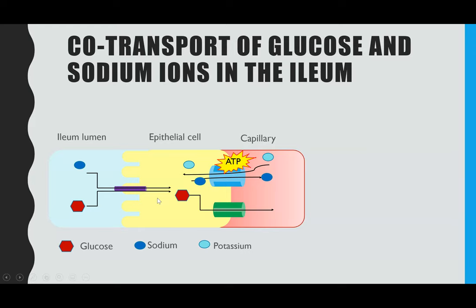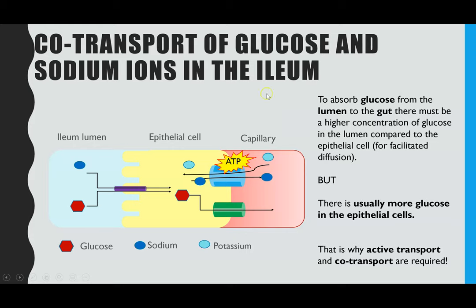Our example of active transport that we're going to focus on is co-transport. The example on the AQA specification that you need to know is co-transport of glucose — or the same applies for amino acids — co-transport of glucose with sodium ions in the ileum. So within the small intestines, we're looking at how glucose is absorbed into the blood.